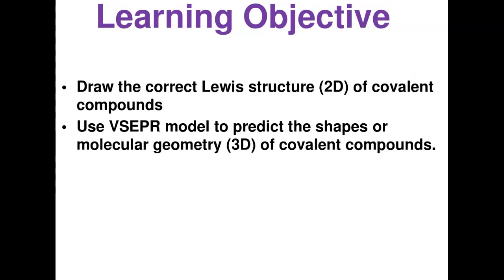What are our learning objectives today? Two important ones. First, we'll draw the Lewis structure, or the 2D of molecules — we call it the Lewis structure of covalent compounds. Second, we use what we call the VSEPR model — valence shell electron pair repulsion model — to predict the shape or molecular geometry, which is the 3D of covalent compounds.